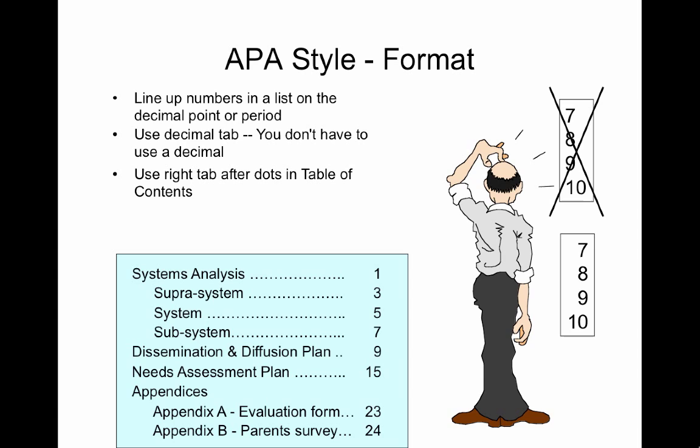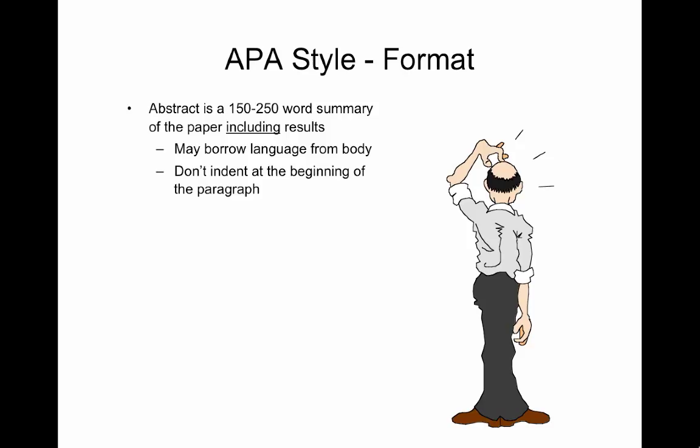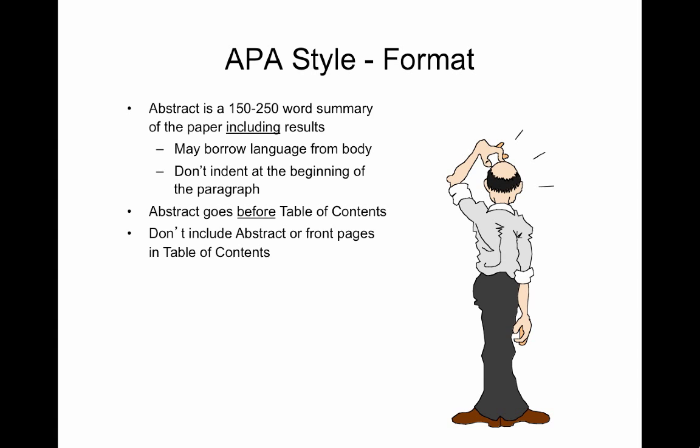Use and indent subheadings in the table of contents. The abstract is a 100 to 250 word summary of the paper that includes results. It's usually only one paragraph. You may borrow language from the body of the text, so I usually do this last. Don't indent at the beginning of the paragraph. The abstract in a long paper goes before the table of contents. Don't include an abstract or front pages in the table of contents. Appendices are in the table of contents with subtitles and page numbers for each.